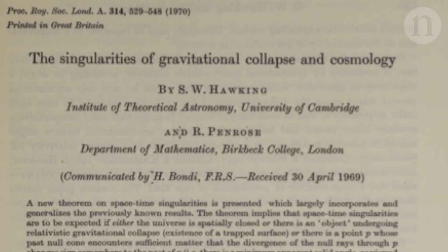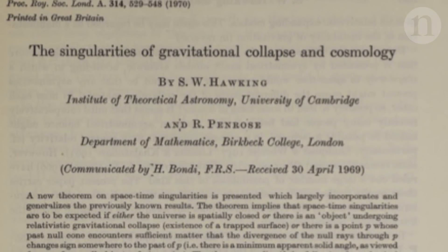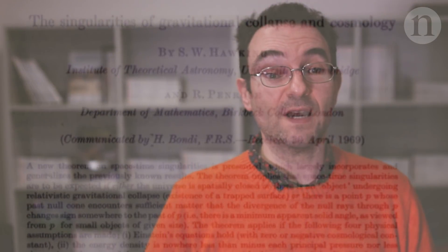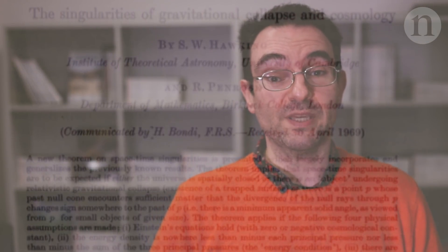Number one: 'The Singularities of Gravitational Collapse and Cosmology.' This paper was published in 1970, at a time when physicists were still finding some of the implications of general relativity hard to swallow — in particular, the possibility of black holes and infinitely dense singularities. Hawking and others had already shown that singularities should form, at least in an abstract mathematical setting.